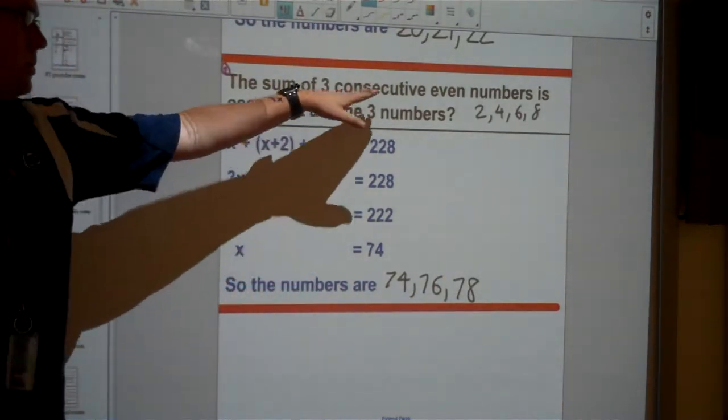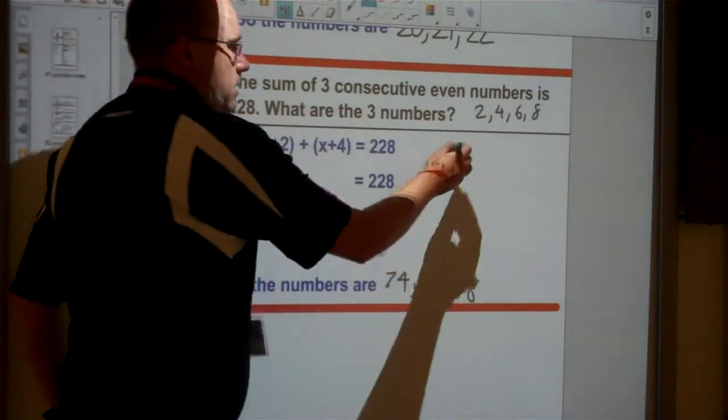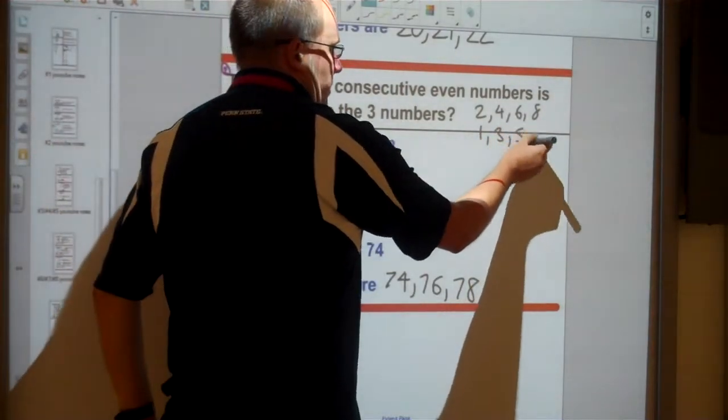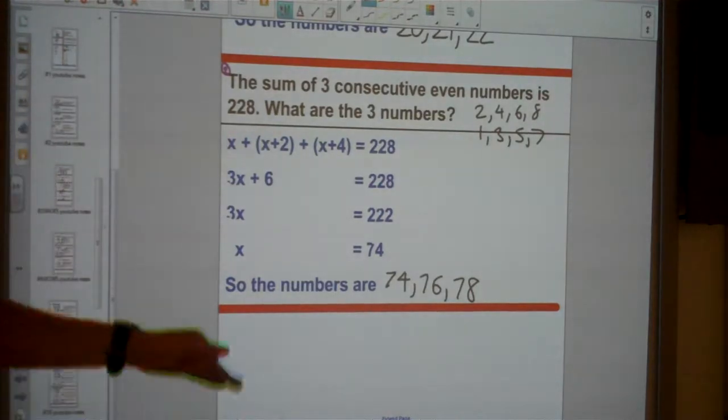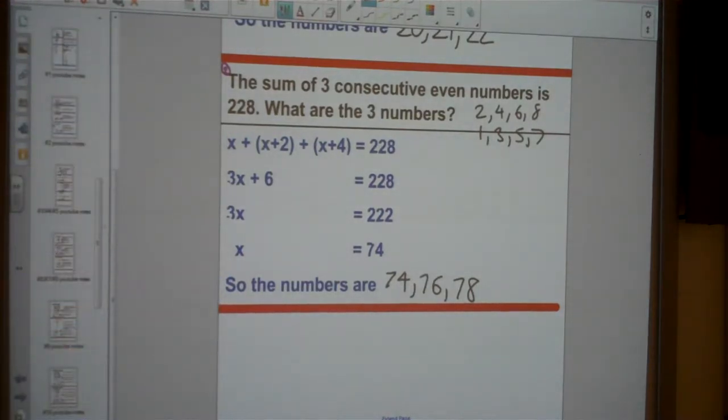Now actually this same method would also work if it was odd numbers as well. 1, 3, 5, 7, notice these also go up by 2 each time as well. So two very specific methods that you need to learn.